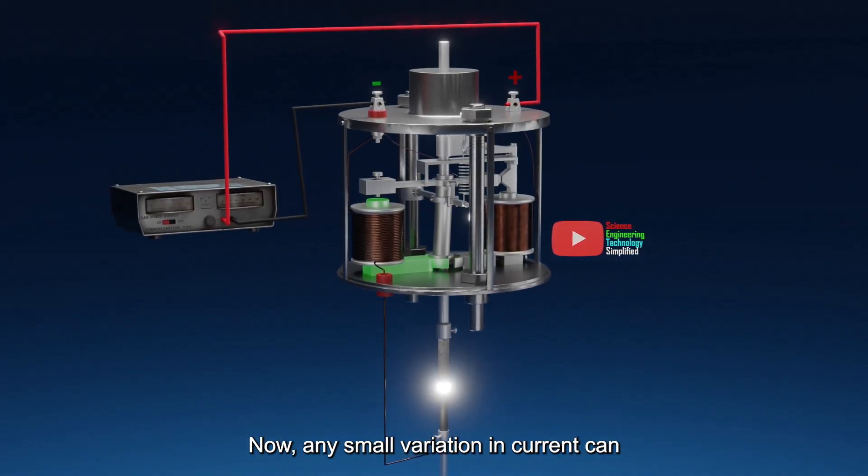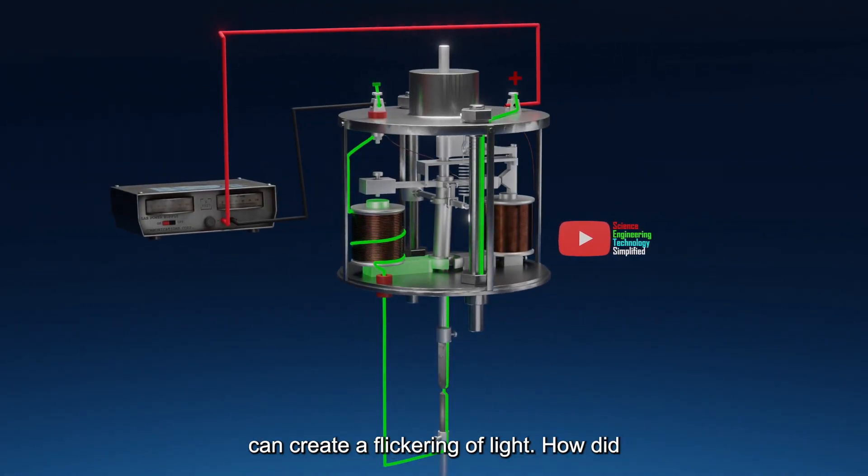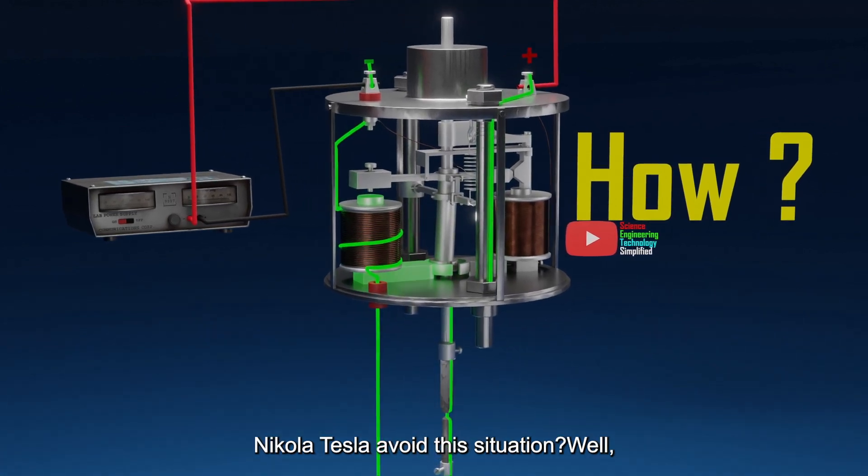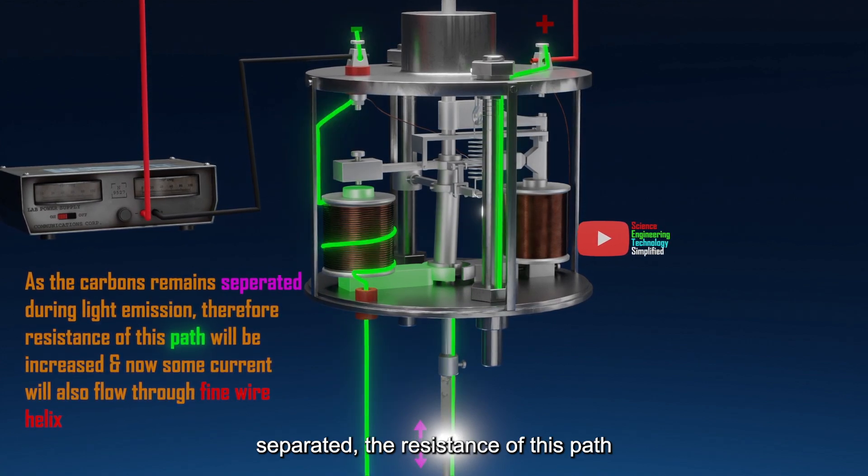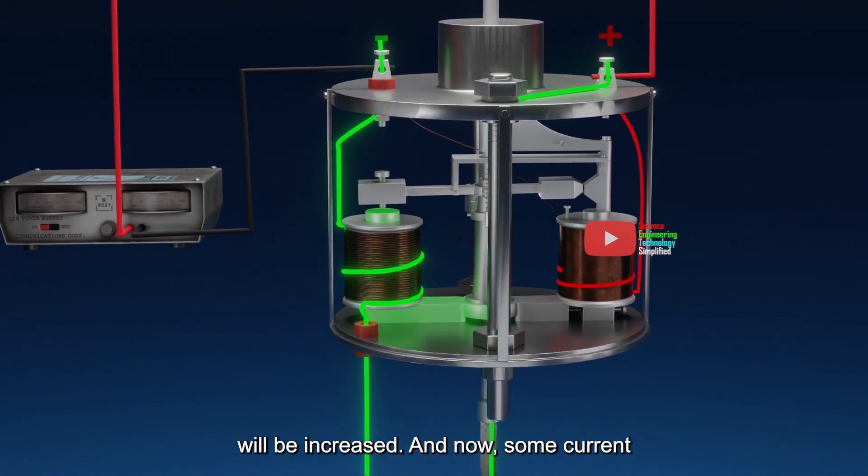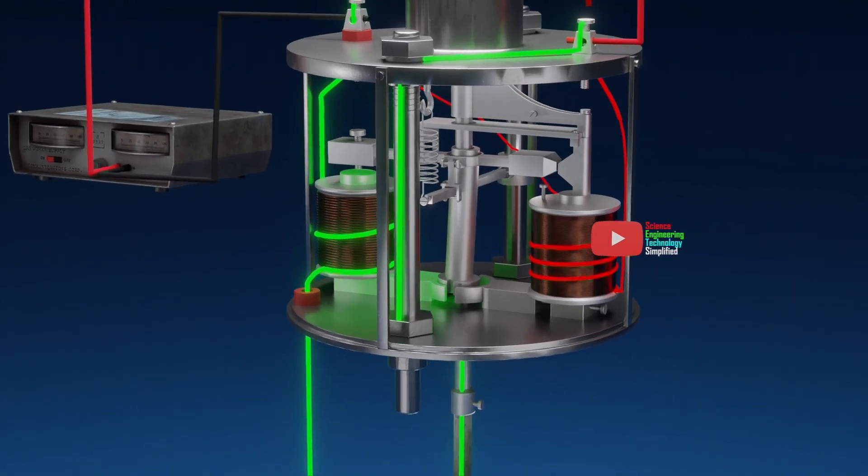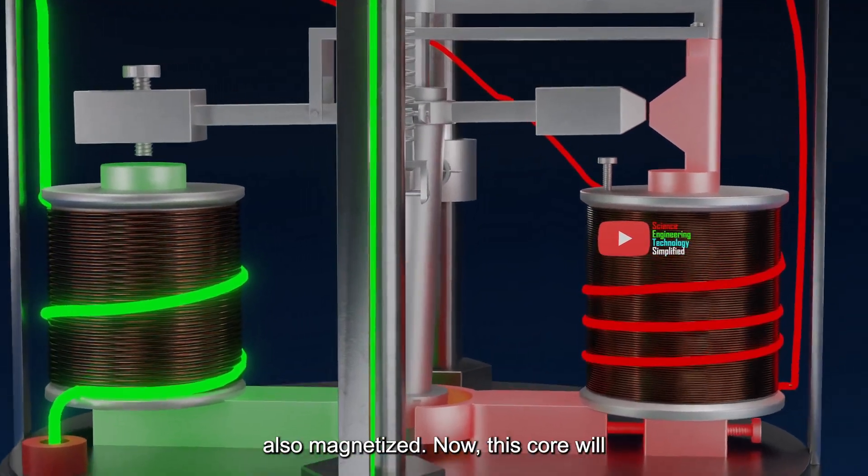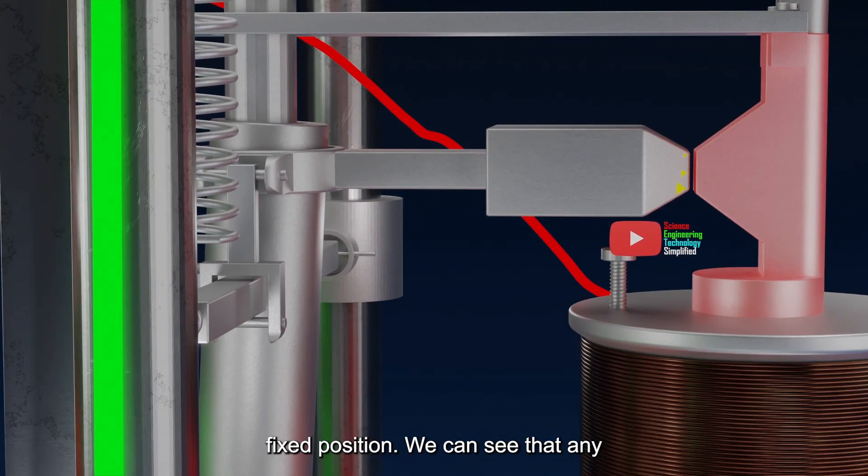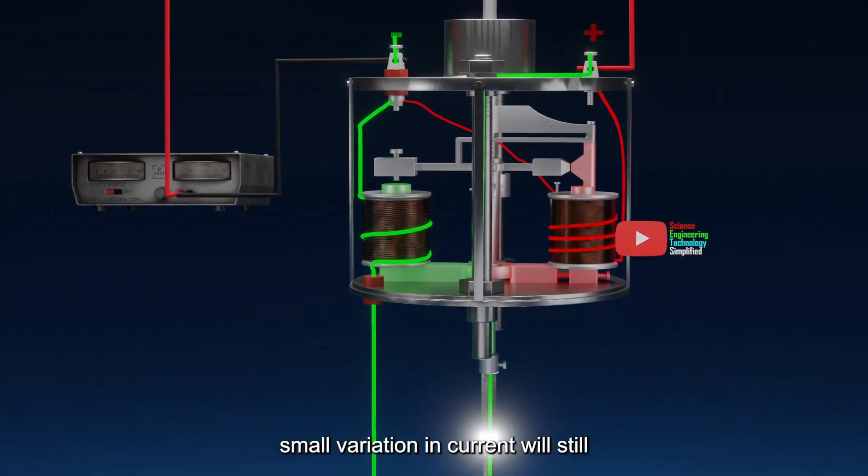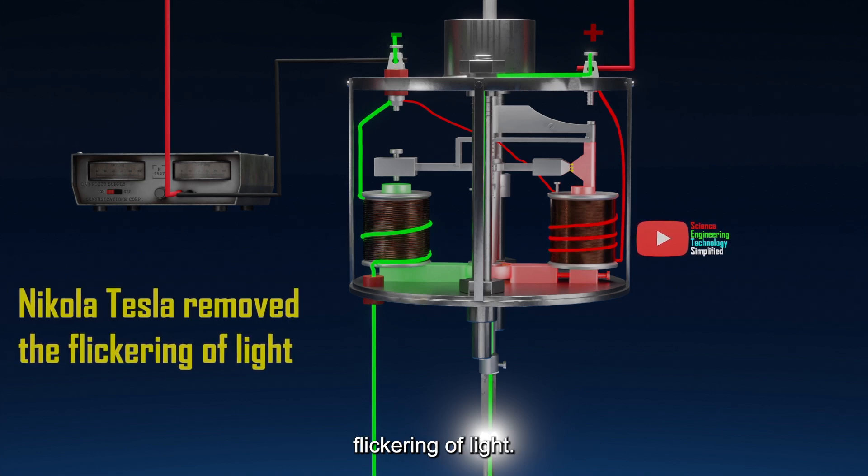Now, any small variation in current can change the magnetism of this core and can create a flickering of light. How did Nikola Tesla avoid this situation? Well, we can see that as the carbons are separated, the resistance of this path will be increased. And now, some current also flows through the fine wire helix. Thus, the core of this fine wire helix is also magnetized. Now, this core will attract the wedge-shaped end of this lever, and it will hold the lever in this fixed position. We can see that any small variation in current will still provide sufficient magnetic force of attraction on this wedge, and it will not disturb the position of this lever. In this way, Nikola Tesla removed the flickering of light.